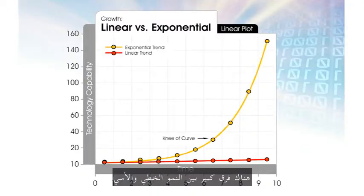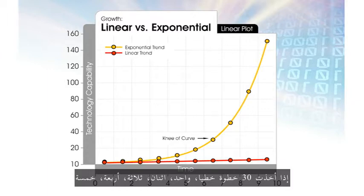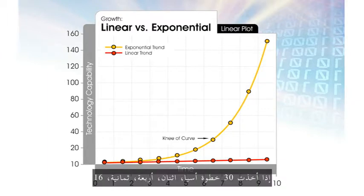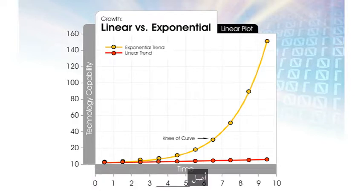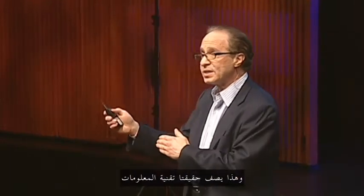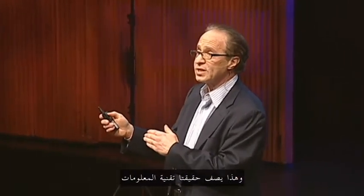There's a big difference between linear and exponential growth. If I take 30 steps linearly — 1, 2, 3, 4, 5 — I get to 30. If I take 30 steps exponentially — 2, 4, 8, 16 — I get to a billion. It makes a huge difference, and that really describes information technology.